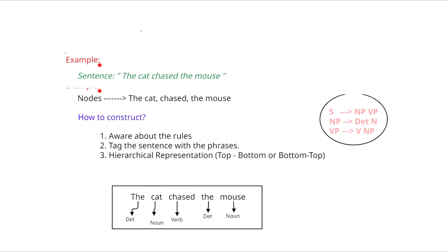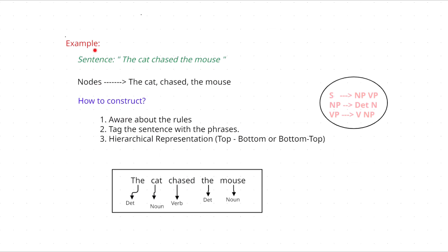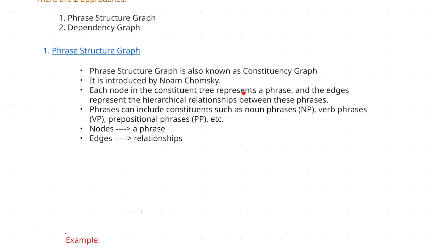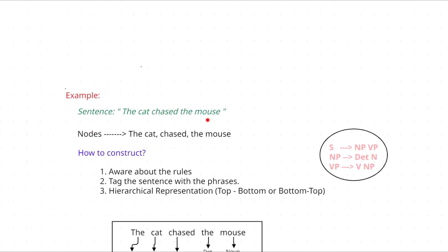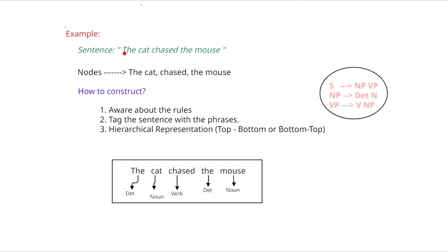Here is the example sentence I have taken: 'The cat chases the mouse.' A node represents a phrase, not a word. I have identified 'the cat' as one noun phrase, 'chases the mouse' as the verb phrase, and within that, 'the mouse' as another noun phrase. So these phrases are considered as the nodes here.